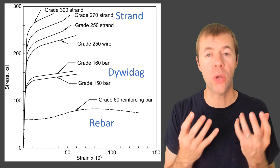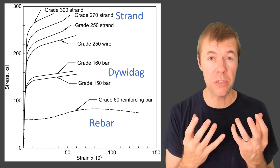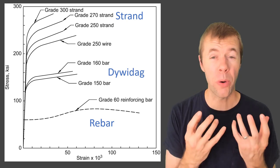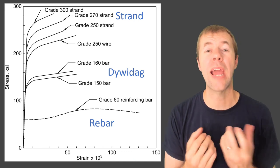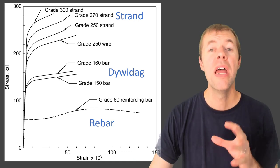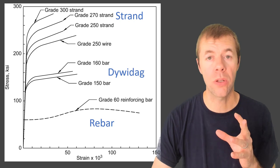Here is what a stress strain diagram looks like for these different materials. Stress is how much load per area you can apply. And strain is like how much they can move. And so you get some idea of what their engineering properties look like.